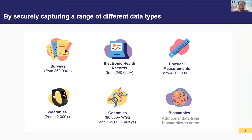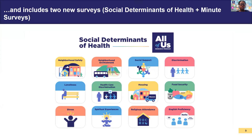The data sets are longitudinal, including our surveys. We currently offer many data types: surveys, electronic health records, physical measurements, wearables, and genomics. In the future we will also have biospecimens. We're also excited about the launch of new surveys, including social determinants of health — you can see our infographics here showing the kinds of questions included — and also our minute surveys which give more information about participants.